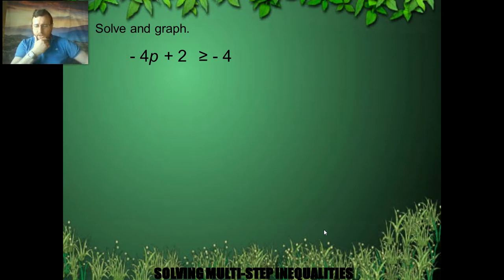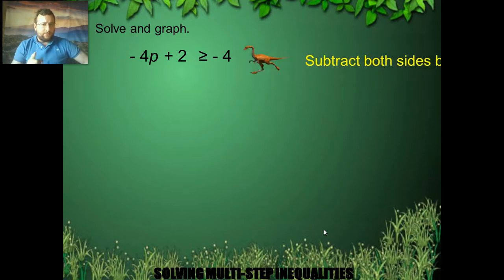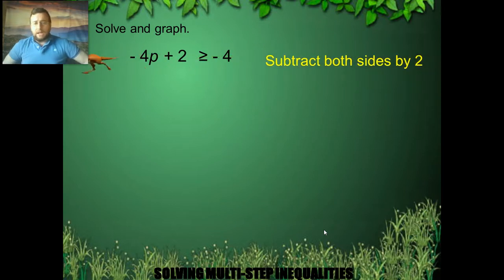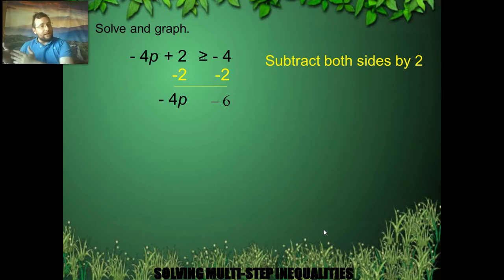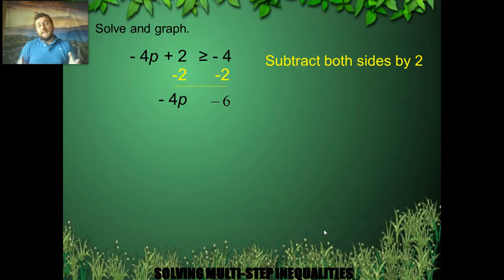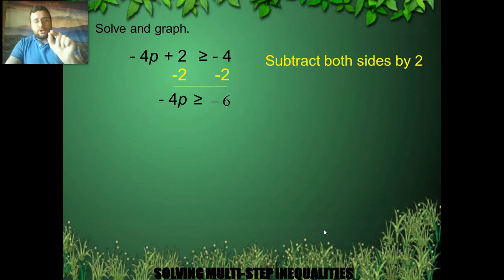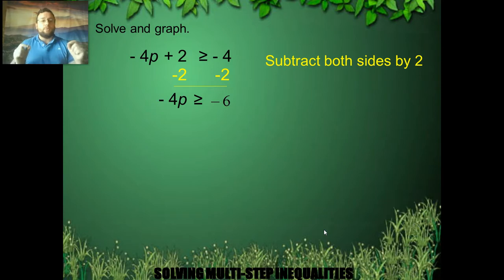To get rid of the plus 2, I subtract it from both sides. That plus 2 cancels out on the left, and I get negative 4 and another negative 2, which makes negative 6 — even more negative. Now I still have negative 4p on the left side. Notice you do not change the orientation of the sign because I subtracted 2 — you only change the orientation when you divide or multiply by a negative number.